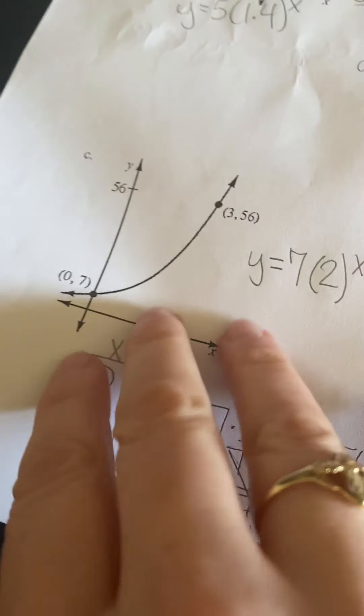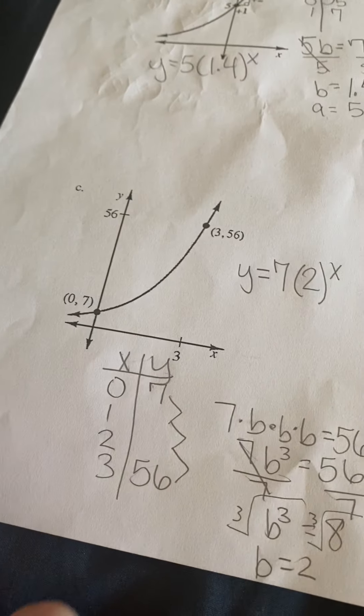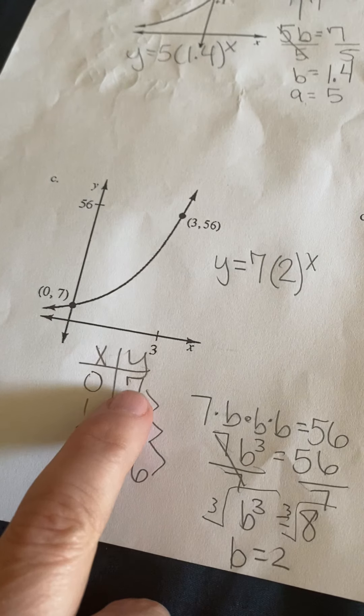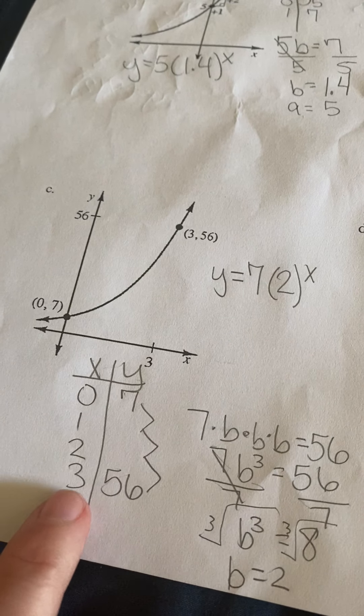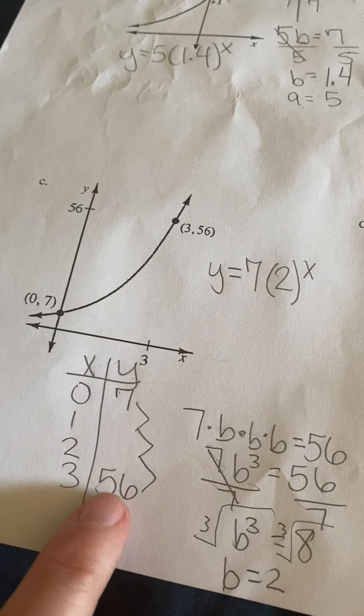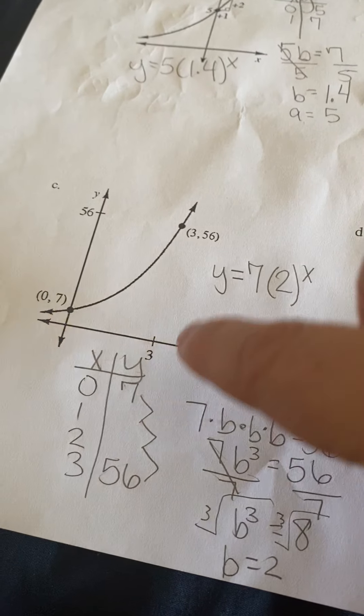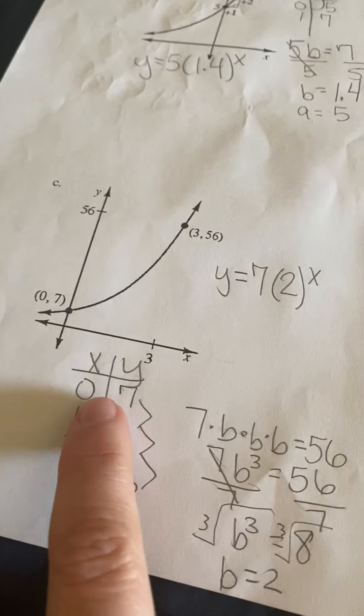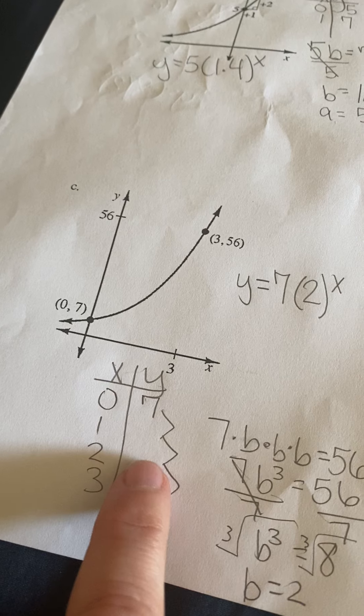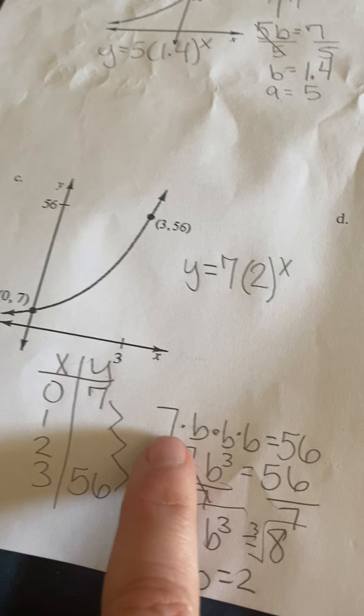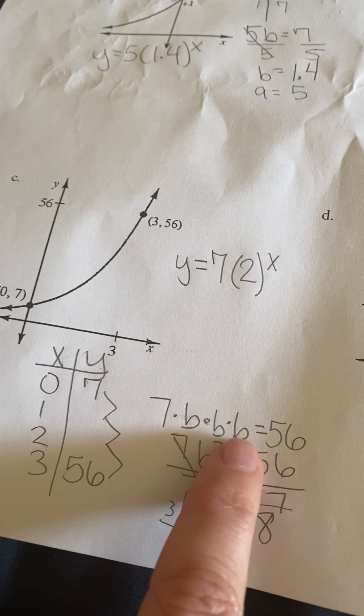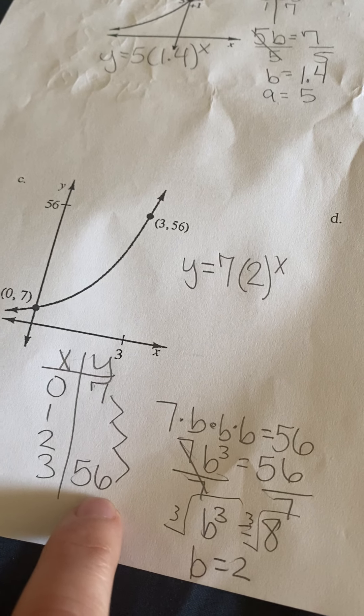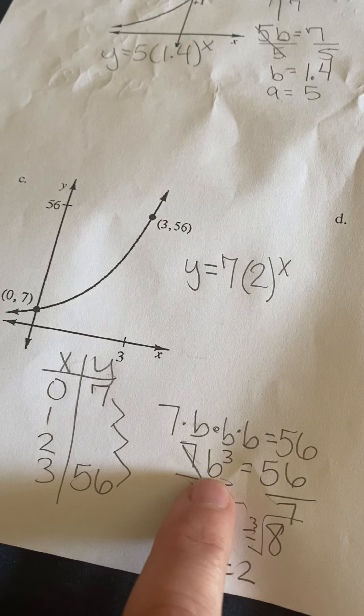Okay, down here on c, this time you're given (0, 7) and (3, 56). So since you have to multiply, think of it as this: 7 times what, times what, times what gives you 56. So 7 times b times b times b, because you have to go down 3 levels. Well, that's b to the 3rd.